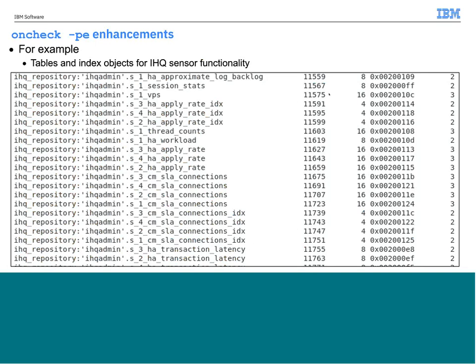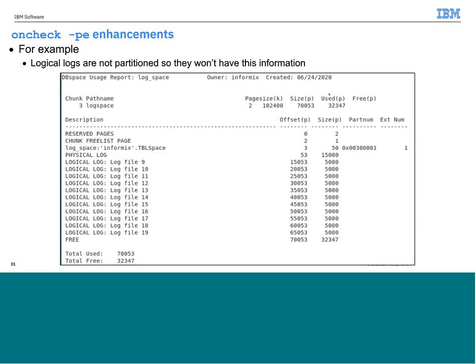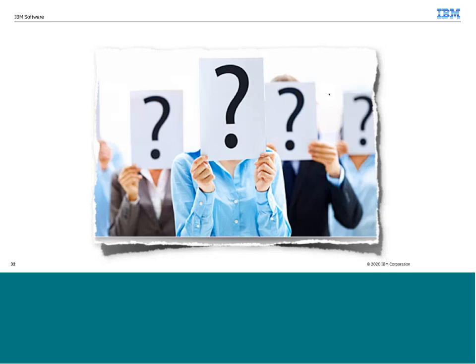This is an example of looking for IHQ sensor functionality — grepping for objects within the IHQ repository database, you can see all the different tables created for the different sensors active in the instance at that moment. Obviously, if your space has logical logs in them, you will get output for those as well, but since they are not partitioned, you are not going to get part numbers or extent numbers for them. And that's oncheck -PE.